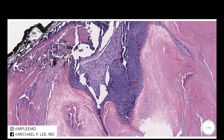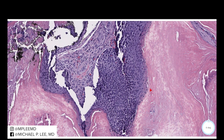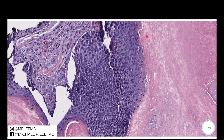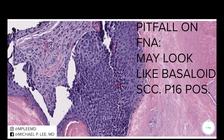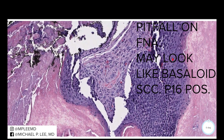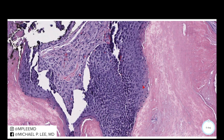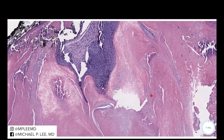A diagnostic pitfall I'd like to share: this basaloid rim can be extremely primitive, with crowding of cells and some mitotic figures. This is a diagnostic pitfall on fine needle aspirate of neck lesions. When you aspirate a lesion in the neck, these basaloid cells along the rim are frequently P16 positive. Since we use P16 as a surrogate marker for high-risk HPV, the pitfall is aspirating these basaloid cells, finding them very atypical, throwing P16 on it, and getting a positive result. Recognizing this possibility makes us less likely to make that error.